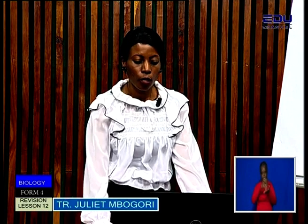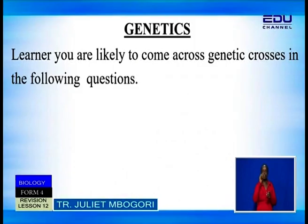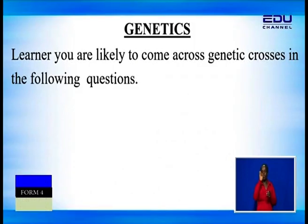Lana, you are likely to come across genetic crosses, and the genetic crosses will be in four areas: incomplete dominance, complete dominance, linkage, and co-dominance.